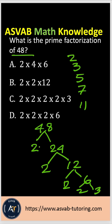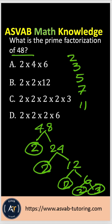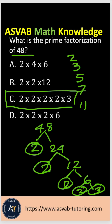So the prime factors are: 2 times 2 times 2 times 2 times 3, which equals 48. That is the correct answer, option C.